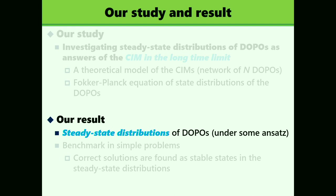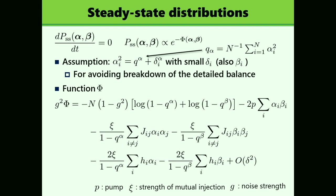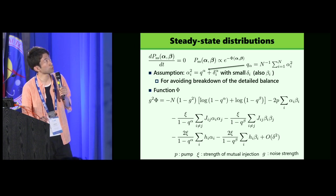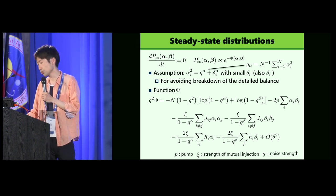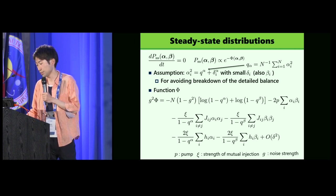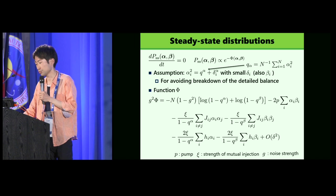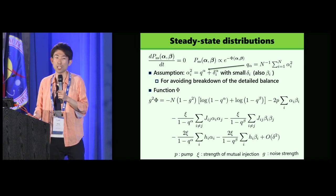Then, we next derived the steady-state distributions. Steady-state distributions are expected to be realized in the long-time limit. So this is the answer of the CIM in a long-time limit. That satisfies the equation, the derivative of that with respect to time is equal to zero. We express P steady-state proportional to exponential minus some function phi. Here, we impose some assumption that alpha_i squared is equal to some constant Q plus some small quantity delta. We impose this similar assumption also for beta.